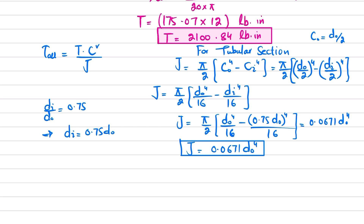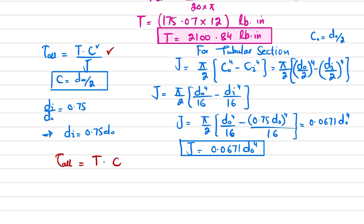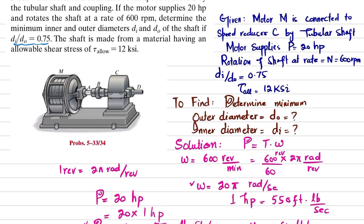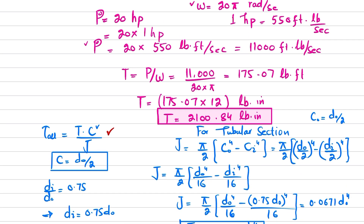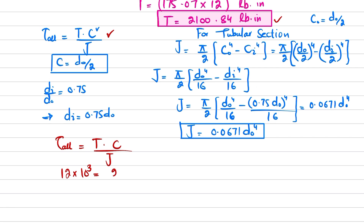C equals d-naught over 2, since C is the maximum distance from the neutral axis to the outermost point. Substituting into the shear stress formula: allowable shear stress is 12 ksi, so 12×10³ equals torque 2100.84 times C (d-naught/2), divided by J which is 0.0671·d-naught^4.